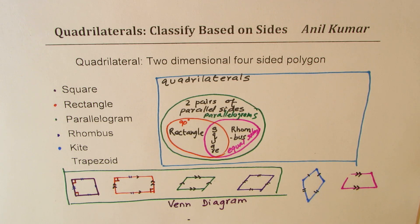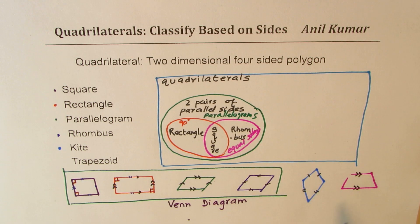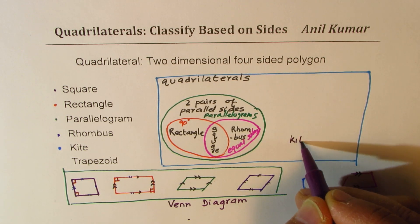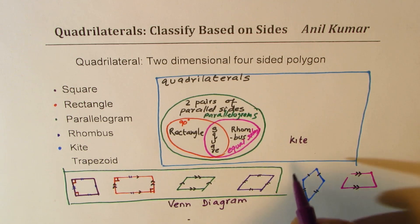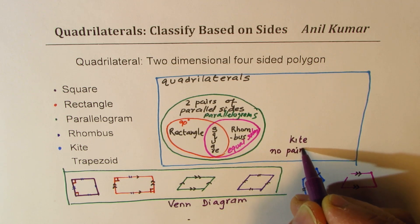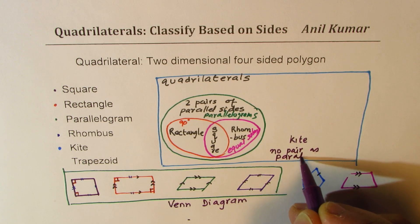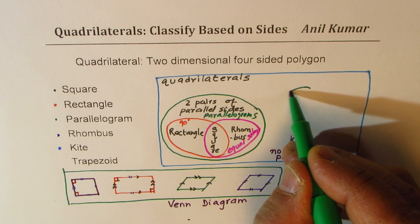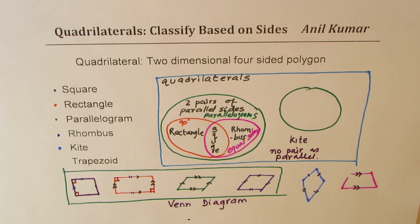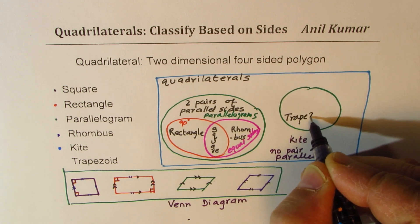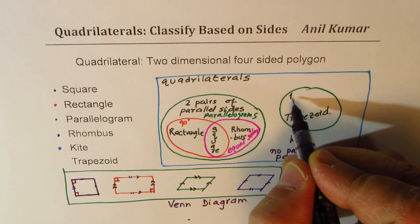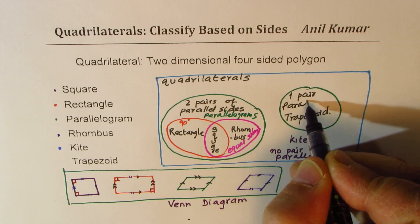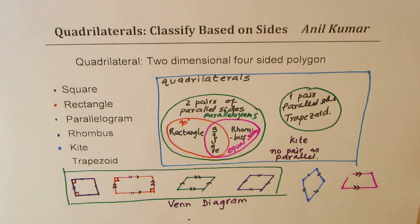Now, how do we handle the remaining two? We could say trapezoids have one pair of parallel sides, and the kite has no pair of sides parallel. So kite sits outside the parallel-sides groups, while trapezoid gets its own group with one pair of parallel sides. Based on sides, that is how we can classify all the quadrilaterals as shown here.